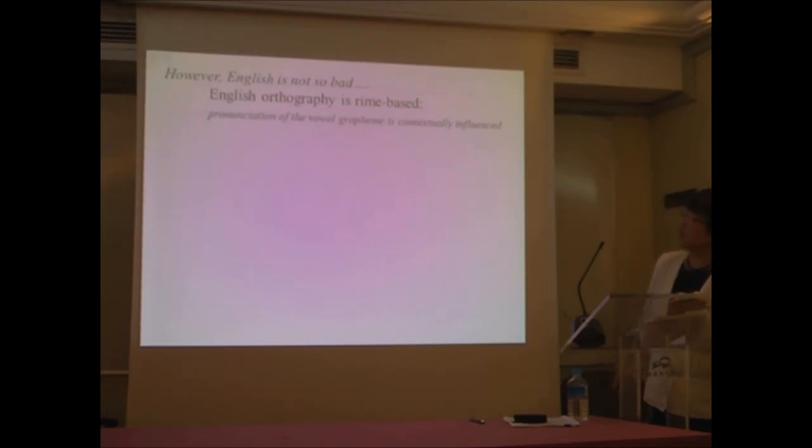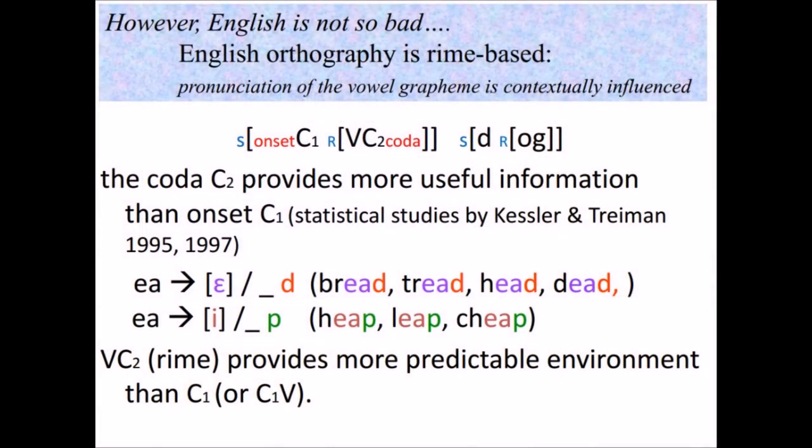However, English is not so bad. English is pretty much rhyme-based. What it means is pronunciation of the vowel grapheme, which seemed to be unpredictable, is contextually influenced. So here's the structure. This is an onset consonant, and the rhyme constitutes a vowel followed by a coda consonant, such as 'dog.' Here's a boundary: onset consonant, and the rhyme units. And what happens is the coda C2, which I labeled C2, provides more useful information than onset consonant C1. This is done by statistical studies.